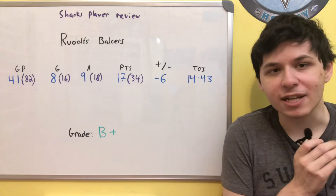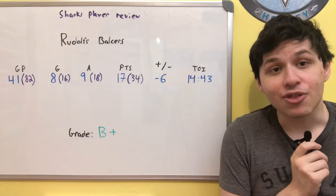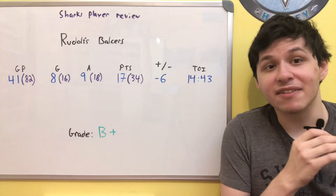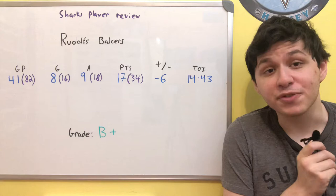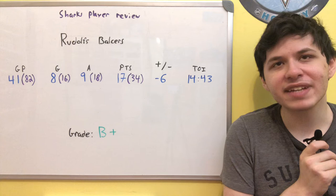So in this case, Rudolfs Balcers came in with pretty tempered expectations and outperformed them quite well, so much so that he ended up being the third highest graded player, even if a player like Timo Meier ended up objectively playing a better style of hockey this season. It's just that when you take into account the expectations, Balcers was a much higher grade than someone like Timo Meier was.